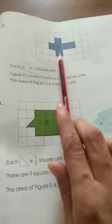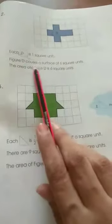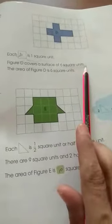1 square unit. That is 1, 2, 3, 4, 5, 6. So, each figure D contains 6 square units.